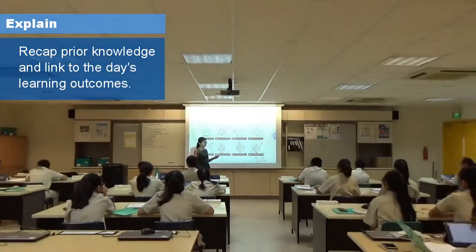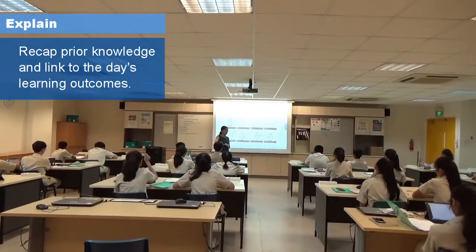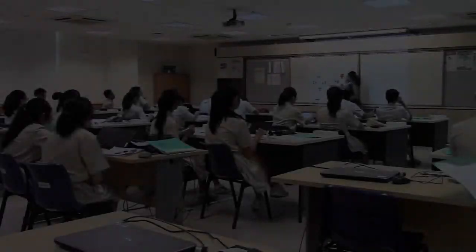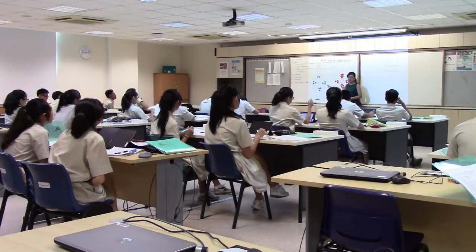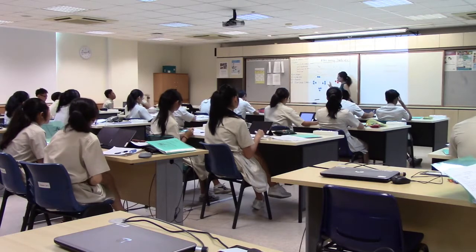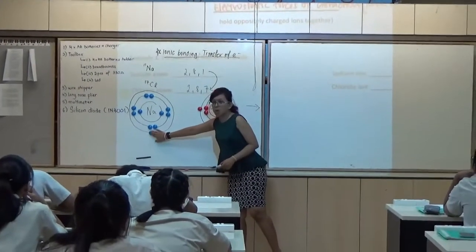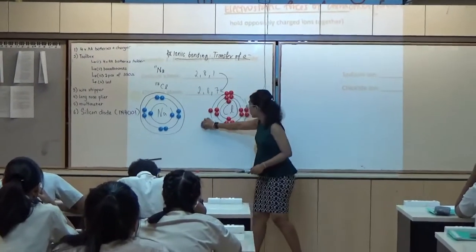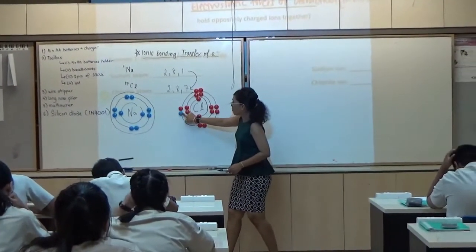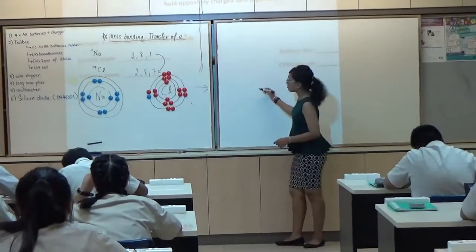Now, can you all keep your iPads away for a while? We'll come back later. I showed dot and cross using different colour magnets. Okay, so this is my dot. This is my cross. Now, how do I... you told me, lose one, alright? So, like this electron, the one on the outermost shell, will transfer to chlorine. Alright. So, how do I draw this?